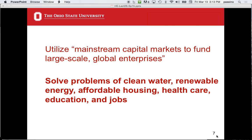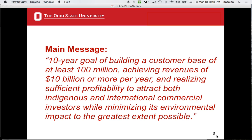They want to solve problems with clean water, renewable energy, affordable housing, health care, education, and jobs — essentially do it all with business. Their main message: you start a social business with a 10-year goal of building a customer base of at least 100 million people, achieving revenues of $10 billion or more per year, and realizing sufficient profitability to attract both indigenous and international commercial investors while minimizing environmental impact to the greatest extent possible.